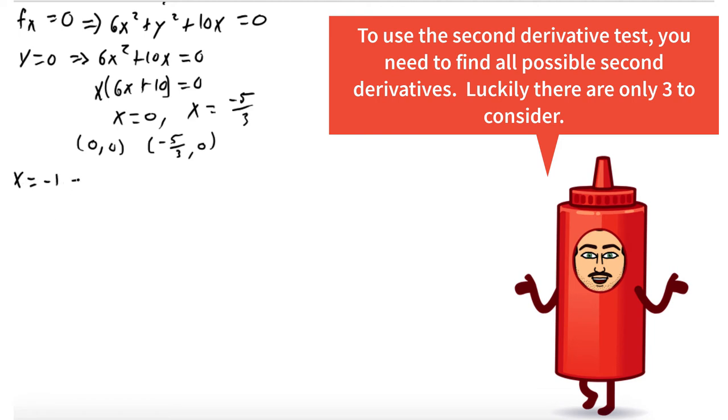All right. And the next case was when x = -1. Our equation becomes 6 + y² - 10 = 0, which is the same thing as y² - 4 = 0. And we could solve this a number of ways. It works out to be y = 2 or y = -2. So this gives us two more points: (-1, 2) and (-1, -2).